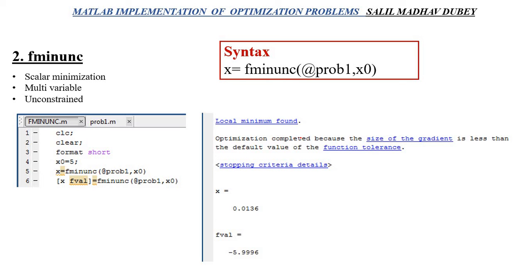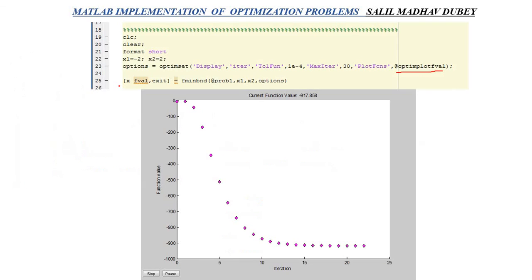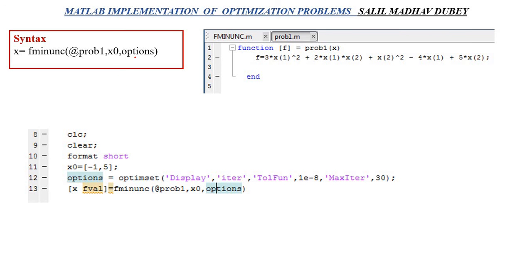When I run it, it will show iterations, and local minimum found. Optimization completed because the size of the gradient is less than the default value of the function tolerance. It shows stopping criteria details. The x value is 0.0136 and f value is minus 5.9996. So you can see, when I used fminbnd solver, the value was minus 6. And here it's a little less than minus 6.